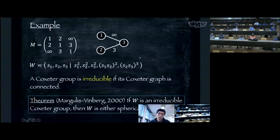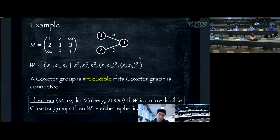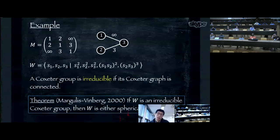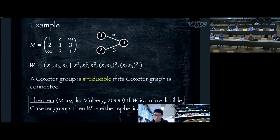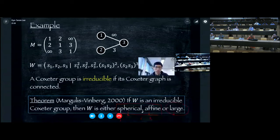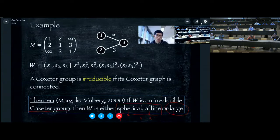An irreducible Coxeter group W is either spherical (meaning finite), affine (meaning virtually abelian), or large (meaning it contains a finite index subgroup surjecting onto a free group of rank greater than one). We are interested in large Coxeter groups. The spherical and affine Coxeter groups are completely classified.